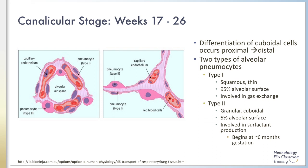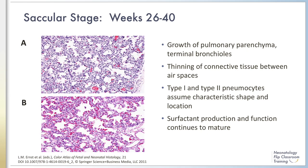Also during the canalicular stage, differentiation of type 1 and type 2 pneumocytes from epithelial cells begins. Type 1 pneumocytes are flat cells that cover the majority of the alveolar surface and are the sites of gas exchange. Type 2 pneumocytes are granular cuboidal cells which cover only about 5% of the alveolar surface. These cells are responsible for surfactant production, which begins around six months of gestation near the end of the canalicular phase. This will be discussed further in module 2.